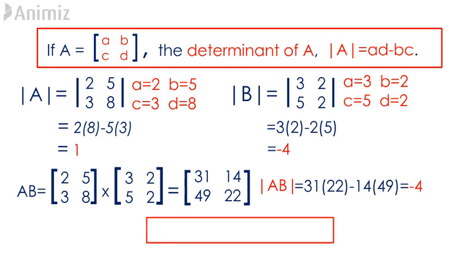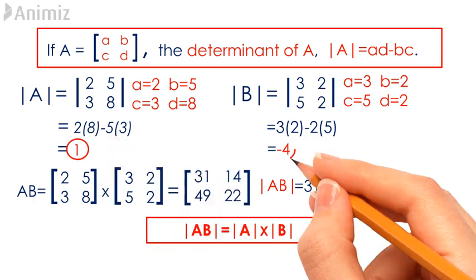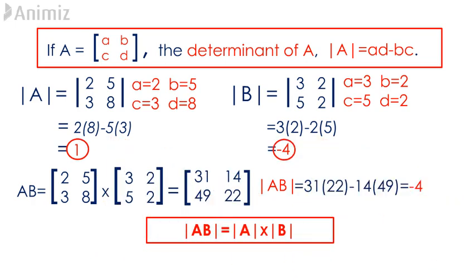Do take note that the determinant of AB is equivalent to the determinant of A times the determinant of B. We can see that multiplying 1, which is the determinant of A, with negative 4, which is the determinant of B, gives us negative 4 — the same value as the determinant of AB. This answers our question for the determinant of A times the determinant of B, which is negative 4.